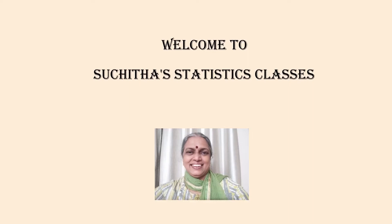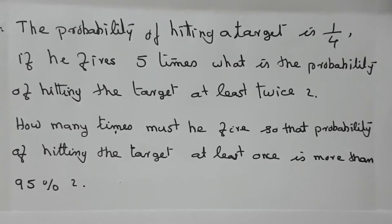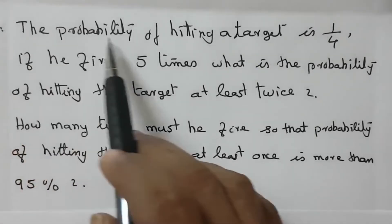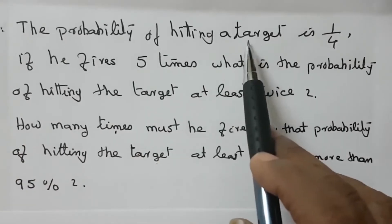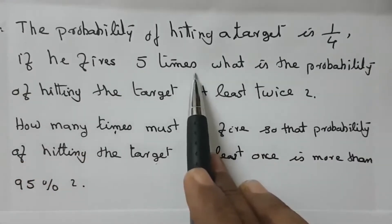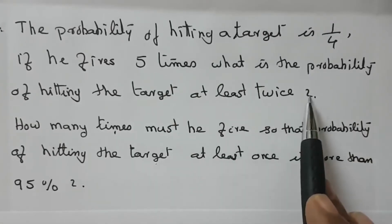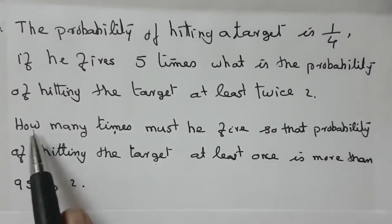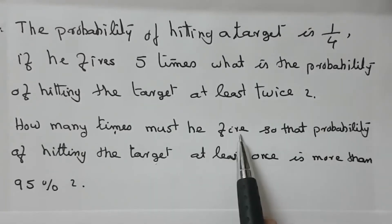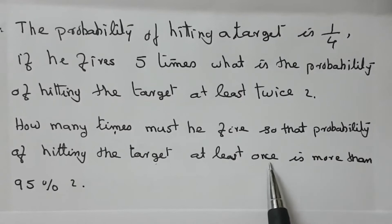Welcome to Suchitra Statistics Classes. Today we are going to discuss one problem from binomial distribution. The problem is: the probability of hitting a target is 1/4. If he fires 5 times, what is the probability of hitting the target at least twice? And one more question: how many times must he fire so that the probability of hitting the target at least once is more than 95%?